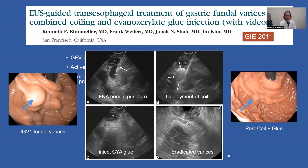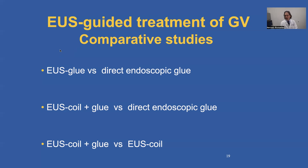These images show how we target the fundic varices under EUS guidance, using a trans-esophageal, even trans-crural approach, first deploying the coil, then injecting the glue. It's very echogenic, and we get a total whiteout of what was previously an anechoic structure. On follow-up, you can see the varices eradicated both endoscopically and with EUS. Different studies are comparing EUS-guided treatment with direct endoscopic glue treatment — glue alone versus coil and glue — and also comparing different EUS-guided strategies.